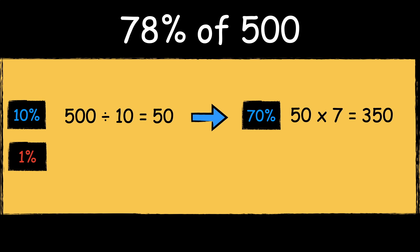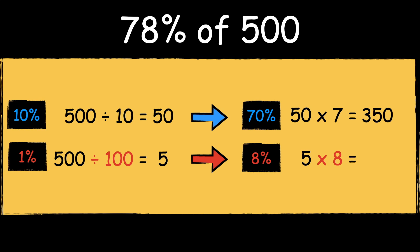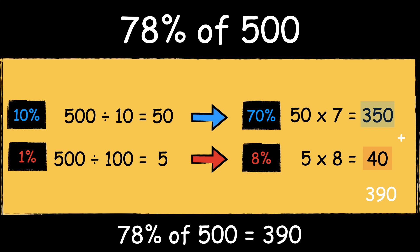Next we find 1% of 500. To find 1% of a number we divide it by 100. 500 divided by 100 is 5. We can then multiply the answer by 8 to find 8%. 5 times 8 is 40. Now that we have found 70% of 500 and 8% of 500, we can add the answers together to get 78%. 350 add 40 is 390, so 78% of 500 is 390.